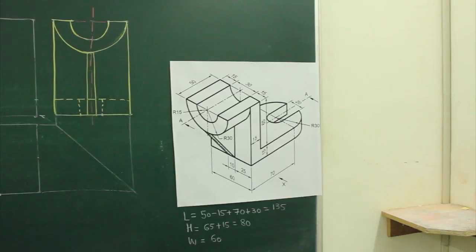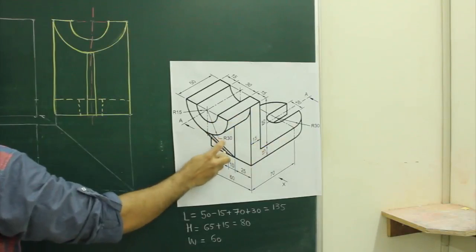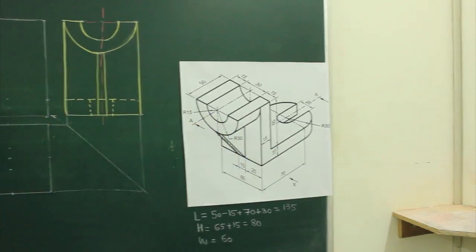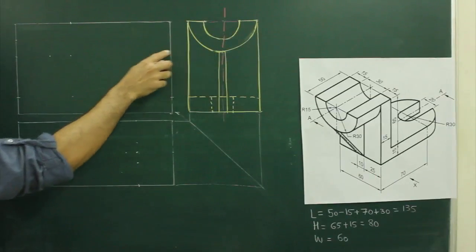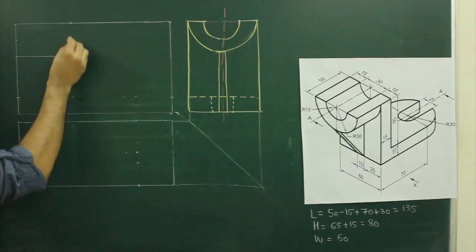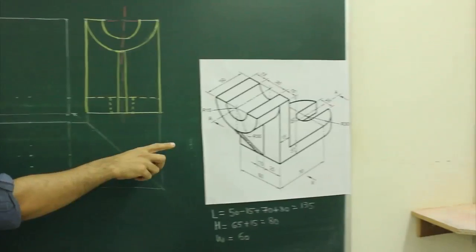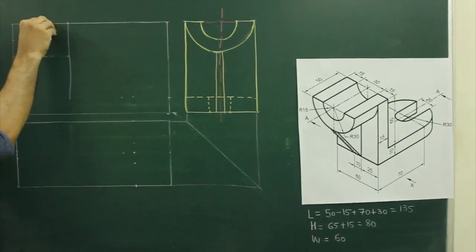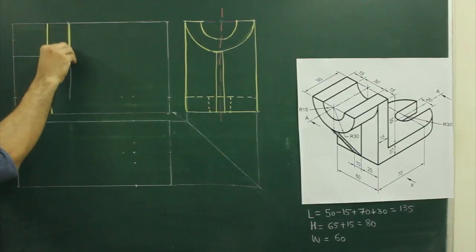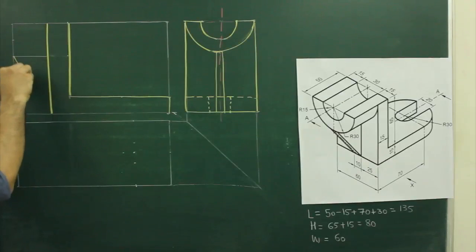Now we will draw the front view. If you see the main diagram, in front view you can see this part, this part and this part, as well as this slope. So what we will do — first we will draw that radius 30, so we can project from side view and join this. Now if you see in front view, this line is still the top, so we will draw that line and we will draw that slope.